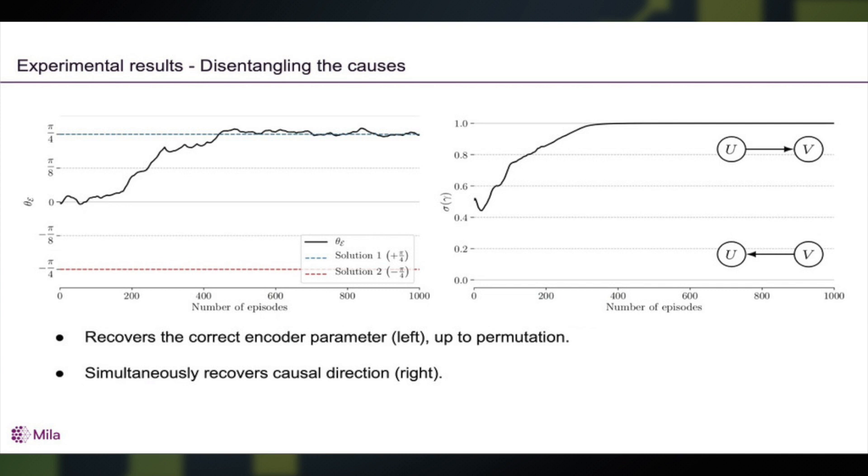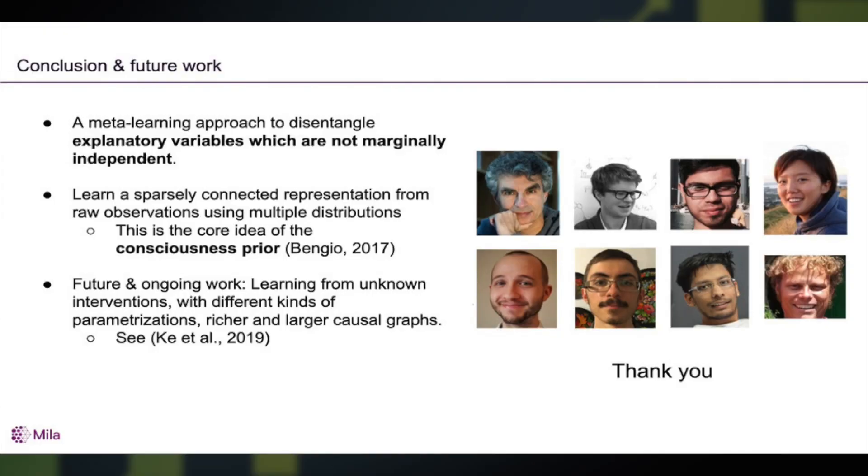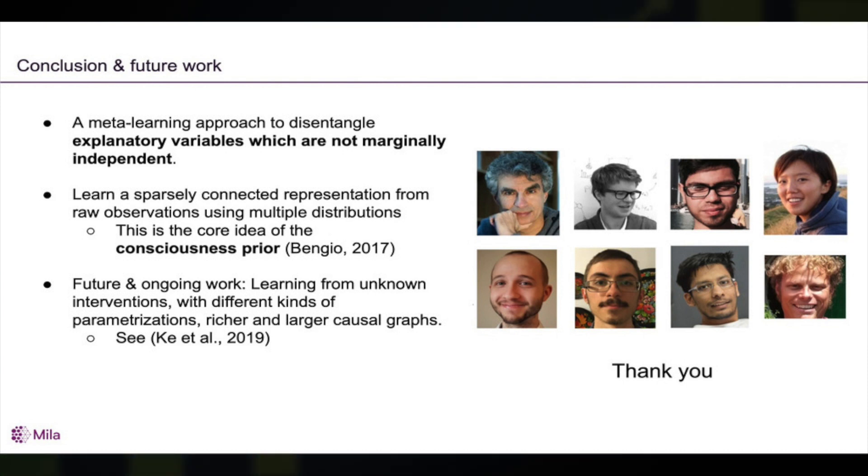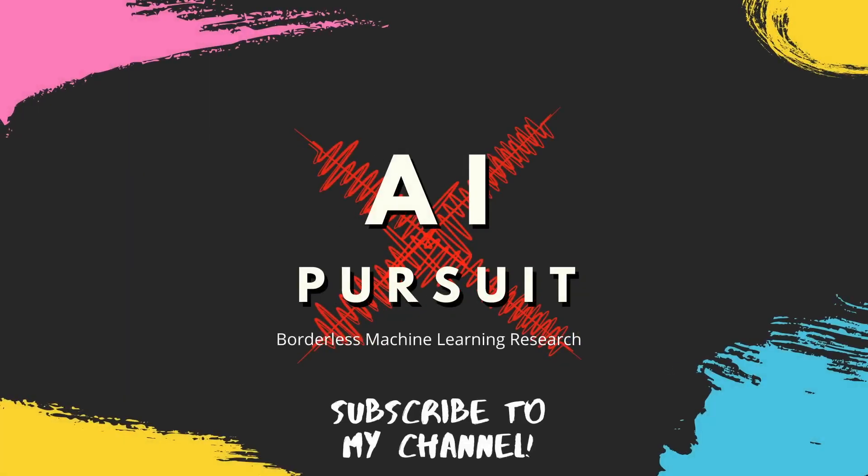Now what we've done is introduce a new meta-learning approach to disentangle explanatory variables, which unlike much past work are not marginally independent. Instead, they are connected through sparse representations at the high level, which is the core idea of the consciousness prior. We have extended this in recent work by Ke et al to allow richer and larger graphs. Thank you very much.